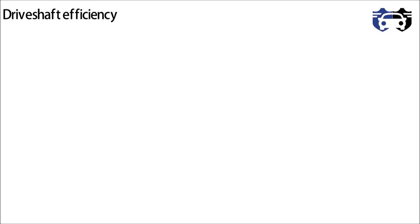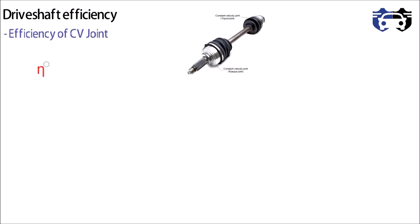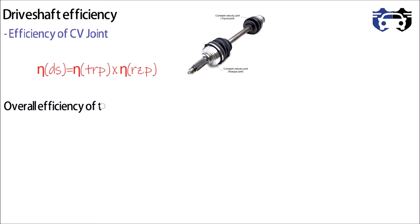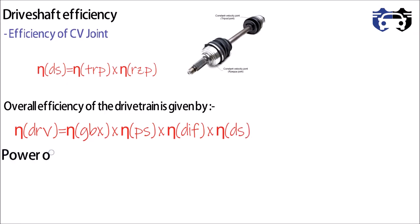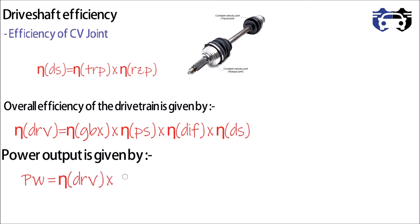The efficiency of the drive shaft generally depends upon the CV joints. It is given by the efficiency of tripod joints multiplied by the efficiency of rzeppa joints. From all these driveline components, the overall drivetrain efficiency equals: efficiency of gearbox × efficiency of propeller shaft × efficiency of differential × efficiency of drive shaft. Since efficiency = power output / power input, the power at the wheels equals drivetrain efficiency × engine power Pe.